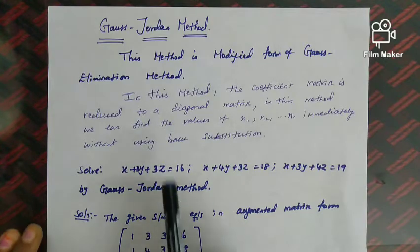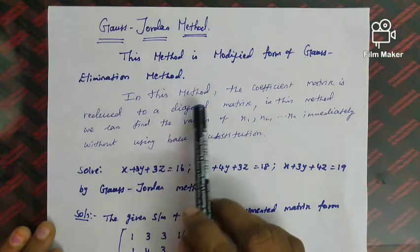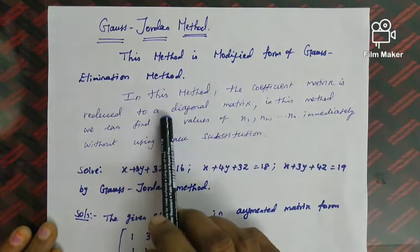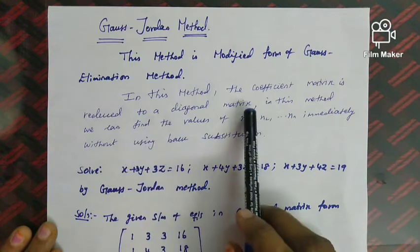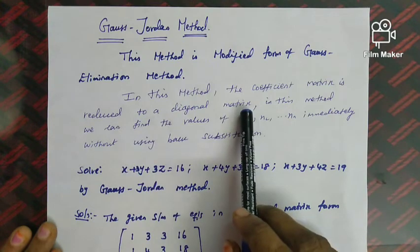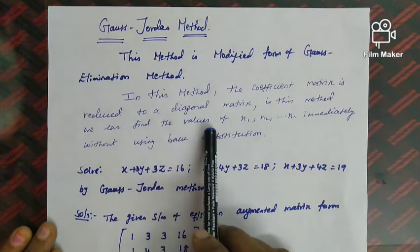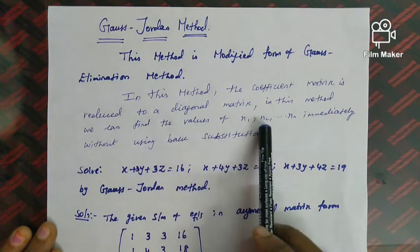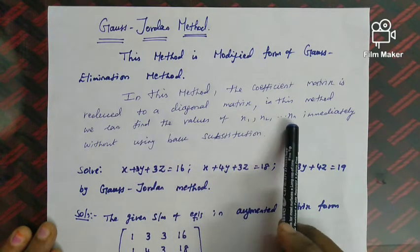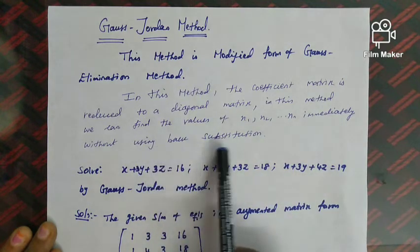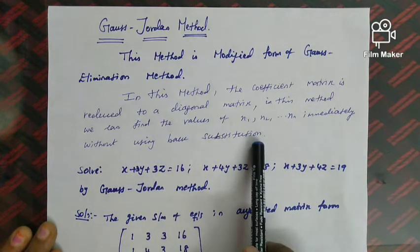In the Gauss-Jordan method, the coefficient matrix is reduced to a diagonal matrix. Using this method, we can find the values of x1, x2, etc. directly without using back substitution.